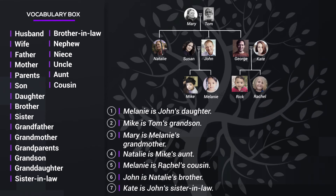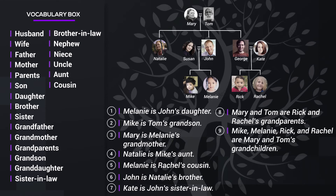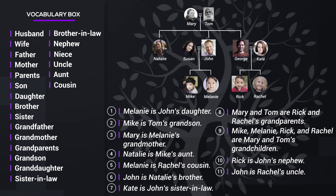Number seven: Kate is John's sister-in-law. Number eight: Mary and Tom are Rick and Rachel's grandparents. Number nine: Mike, Melanie, Rick, and Rachel are Mary and Tom's grandchildren. Number ten: Rick is John's nephew. Number eleven: John is Rachel's uncle. Number twelve: Susan is John's wife.